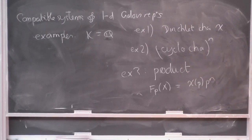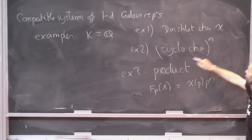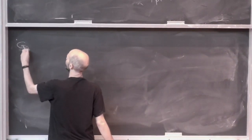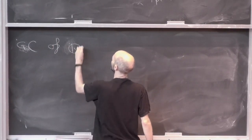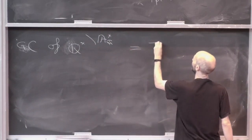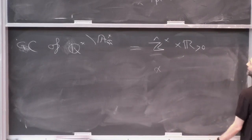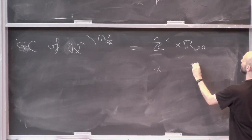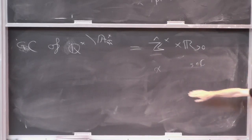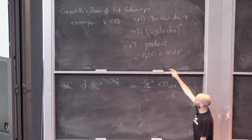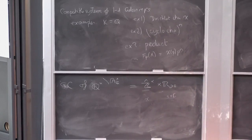So the upshot is — I'm not claiming I know what all the compatible systems of one-dimensional Galois representations are, but if k is Q, given a Dirichlet character and an integer, Grössencharacters of Q are isomorphic to Z-hat star cross the positive reals. A Grössencharacter for Q means a Dirichlet character chi and a complex number s. But the compatible systems we can think of use a Dirichlet character and an integer. There are too many Grössencharacters.